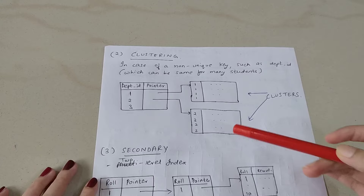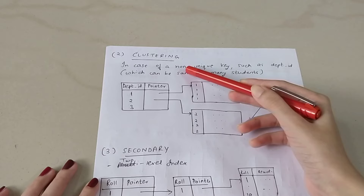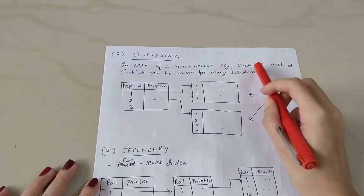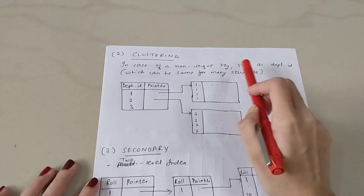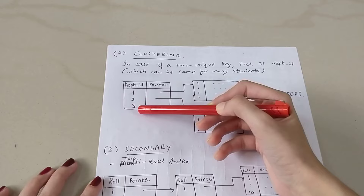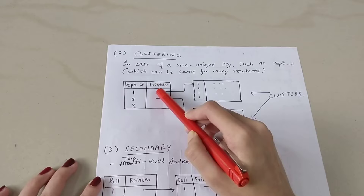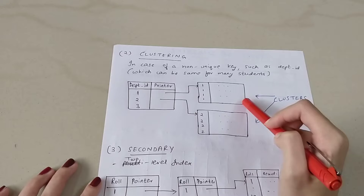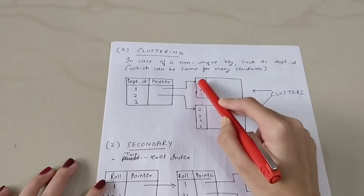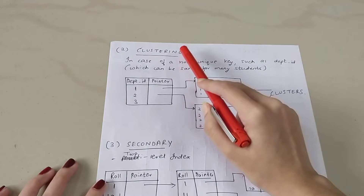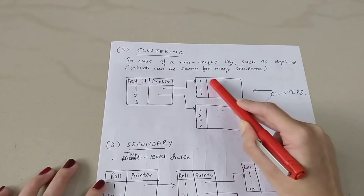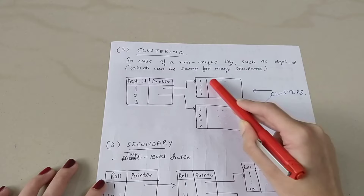The second type is clustering indexing, which is used in the case of a non-unique key. Non-unique means we do not have a single primary key — for example, a department ID that can be the same for many students. In this case, the index table stores department IDs, where each department ID has one pointer pointing to a block that contains all the rows for that particular department. These groups are called clusters. Clustering is used specifically for non-unique keys, where many students can share one department ID.